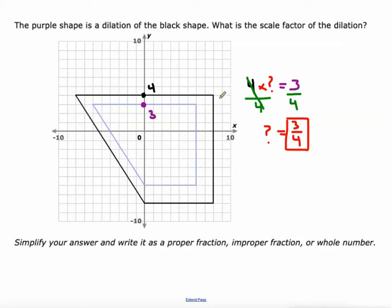So this black shape was reduced by a scale factor of three fourths to create this purple shape. So where else can we see that? We might see it right here. This side length is 12 in length. And when you take three fourths of 12, one fourth of 12 is three, and three times that would be nine, which is this length right here. So three fourths of 12 is nine, or nine over 12 equals three fourths.